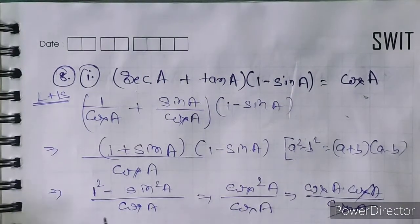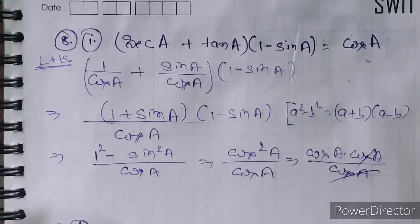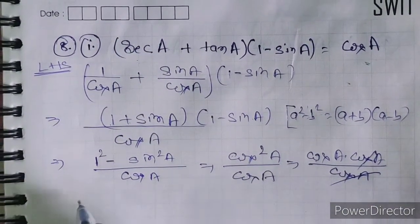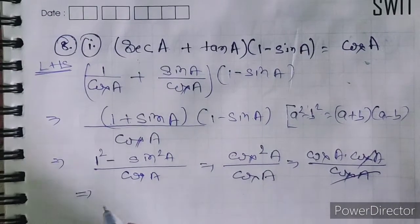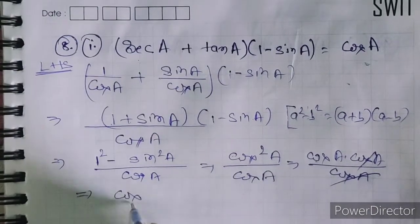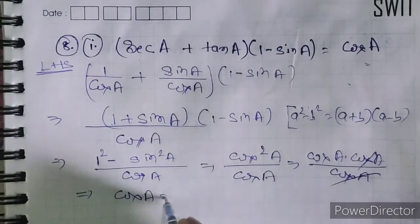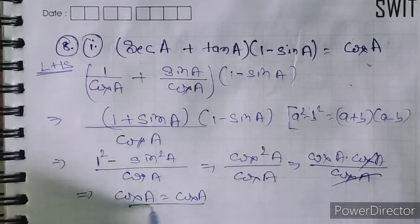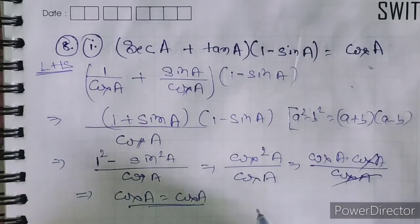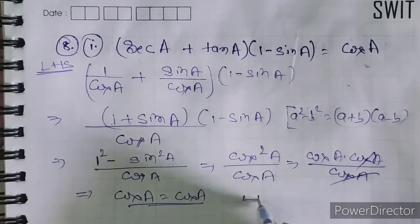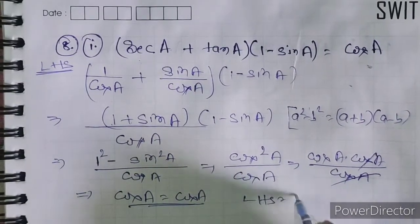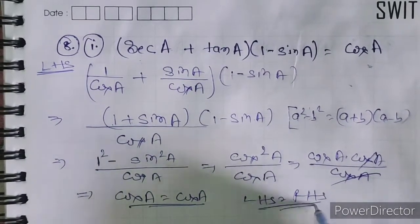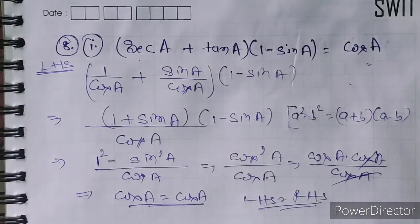So we can write: cos A equals cos A, meaning LHS is equal to RHS, and this is proved.